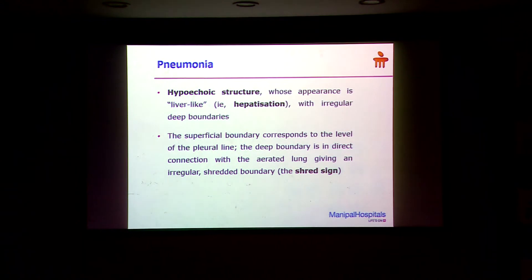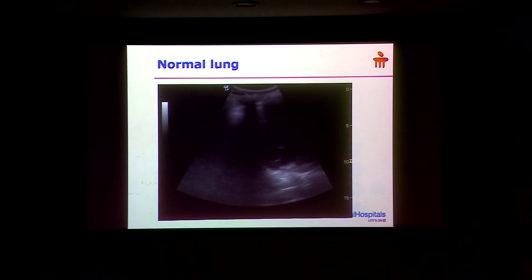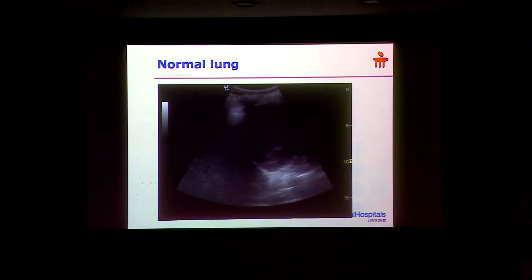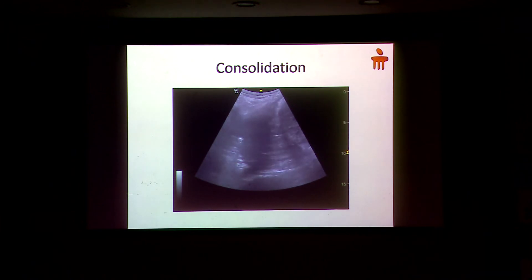Next is pneumonia. How will it look? Here I am showing you a normal lung — the lung is here, the liver is here, and it is moving. You cannot see almost anything; it is called the curtain sign because it looks like a curtain coming and going, because there is no lung pathology. As soon as you have a lung pathology, now you see a tissue-like or paper-shred appearance, and it is white.